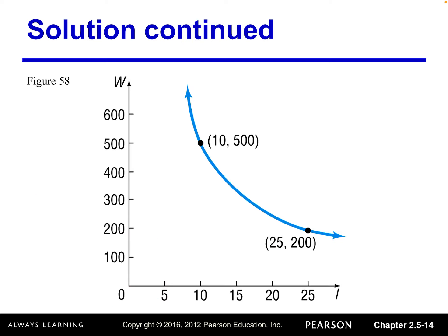And we can also graph this problem because based on what we already know from the problem, we actually identified two points. When the wood is 10 foot long, it supports maximum weight 500 pounds. And when the wood is 25 foot long, it supports maximum 200 pounds. And then we can set up a rectangular coordinate system. The x axis uses the length of the pine wood, and the y axis uses the maximum weight.